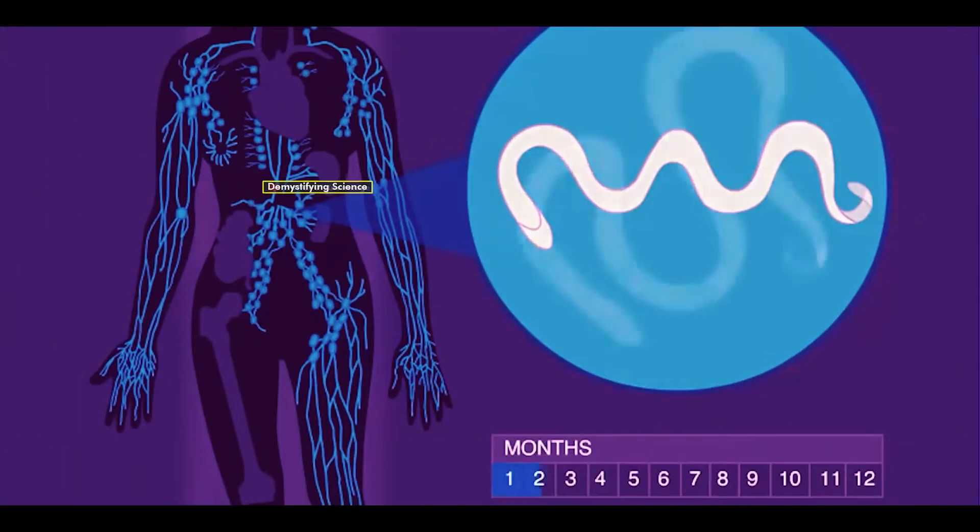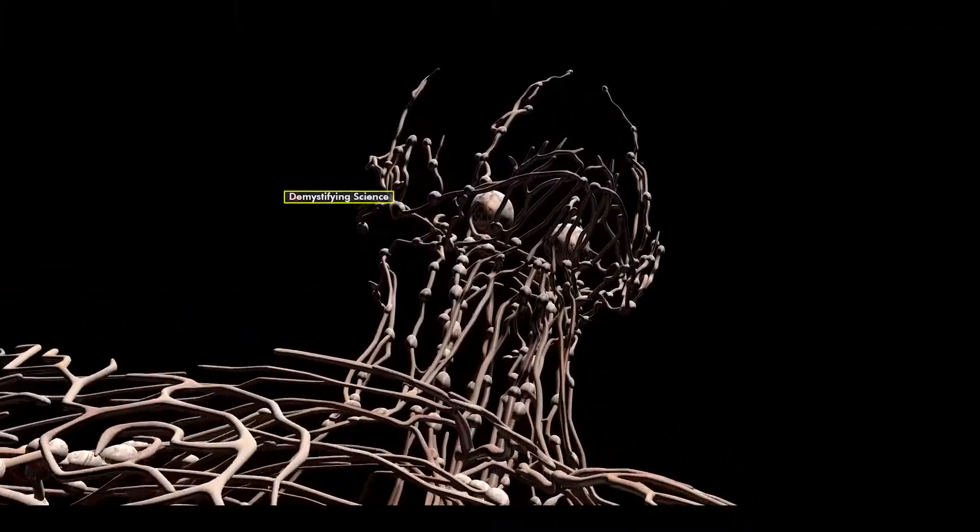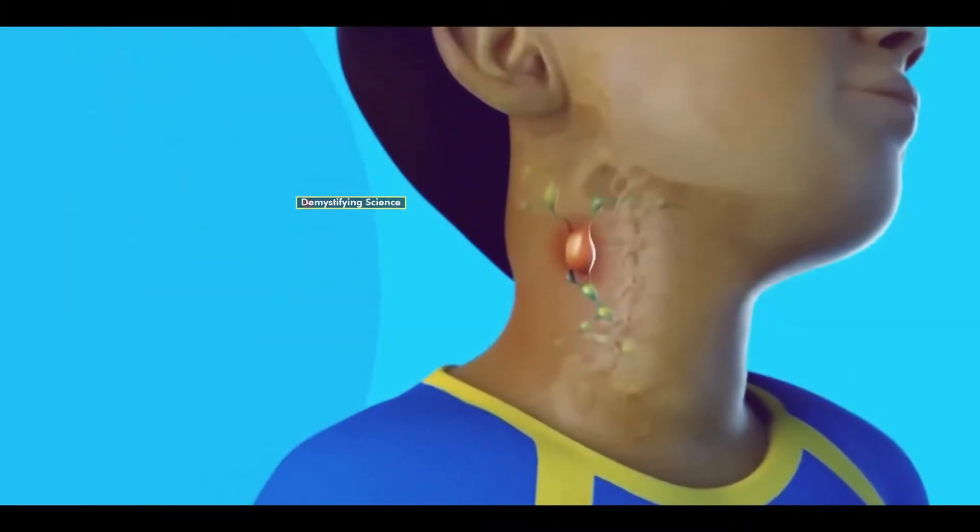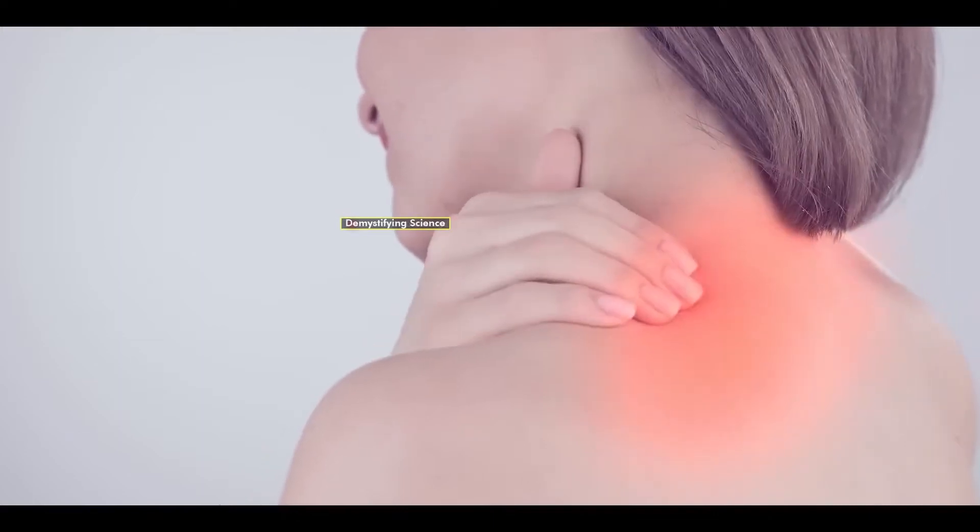Once in the human body, the roundworm matures and begins to damage the lymphatic system. This leads to the blockage of lymph nodes in the lymphatic system, causing swelling and severe pain at the infection site.